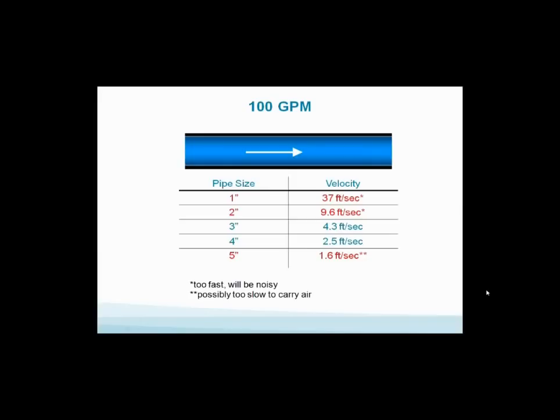What's wrong with a five inch pipe? The velocity is 1.6 feet per second - is there anything wrong with that? Yes, it may not be able to move air. There's a minimum velocity required per ASHRAE to be able to move air around your system and get it to your air separators and get it under control.